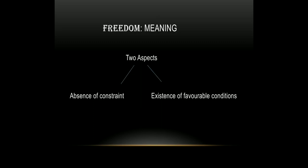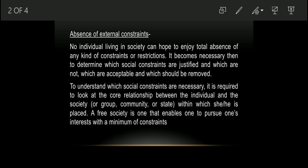The first aspect is absence of constraint, and the second is existence of favorable conditions. Absence of external constraint means if there are any restrictions or constraints on any individual or citizen, then that person will not be able to enjoy a free life. No individual living in a society can hope to enjoy total absence of any kind of constraints or restrictions.